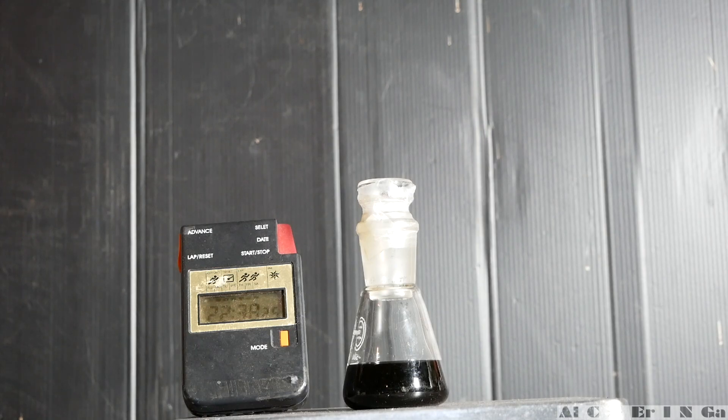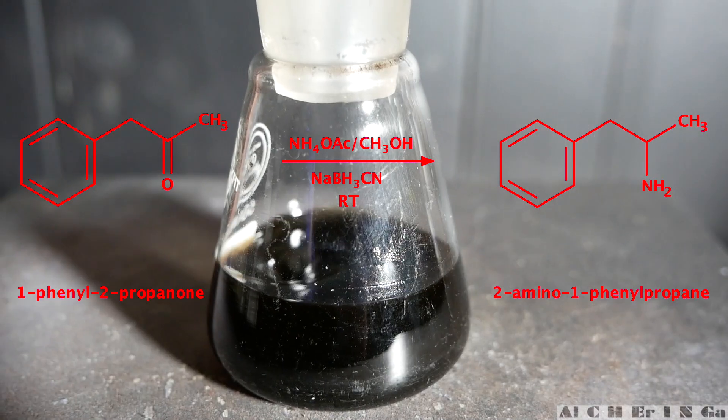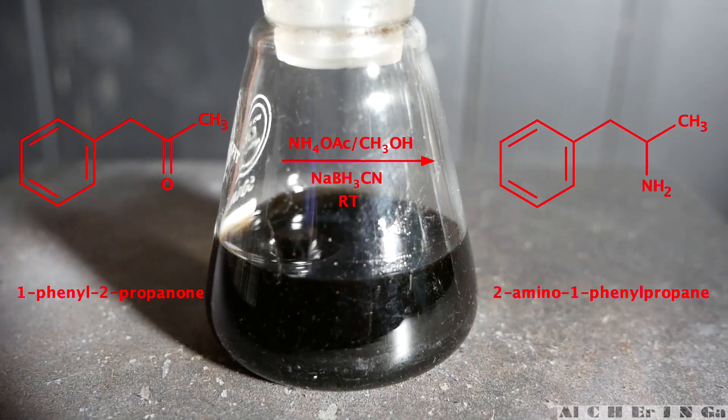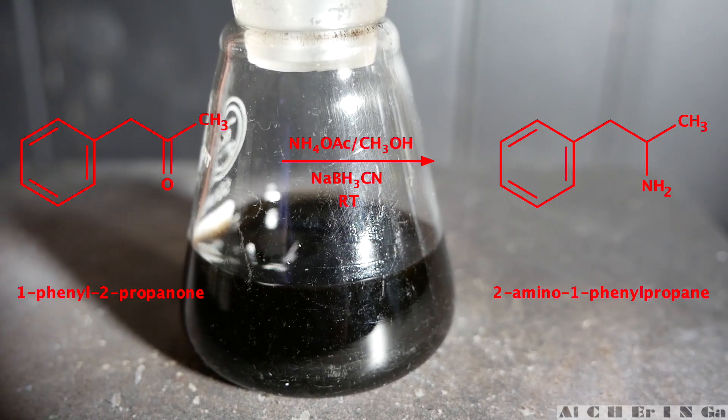Okay now, let's have a look at the chemistry. 1-phenyl-2-propanone dissolved in a mixture of methanol and ammonium acetate react in the presence of sodium cyanoborohydride at room temperature to form 2-amino-1-phenylpropane. This is a reductive amination reaction.